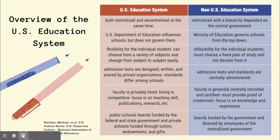Our schools are both centralized and decentralized at the same time. Our federal government does have some control over our education system but they do not have total control — our states, counties, and cities have influence in our schools as well. The federal department is called the U.S. Department of Education; they influence schools but do not govern them, so there's no strict hierarchy from the federal government down.